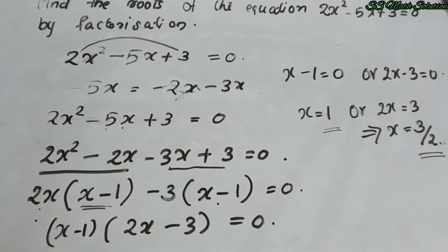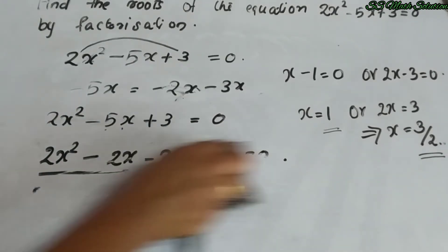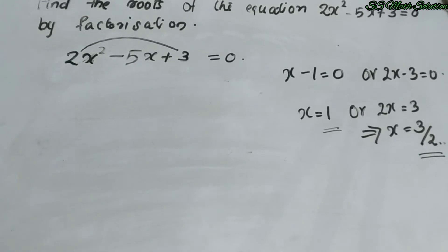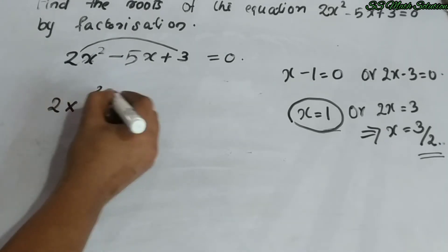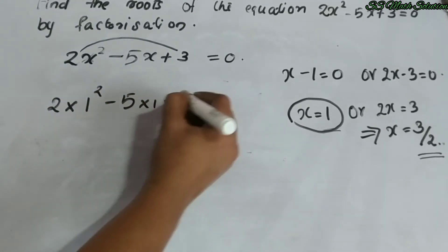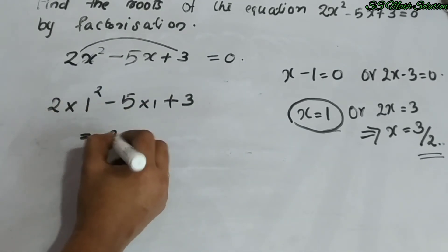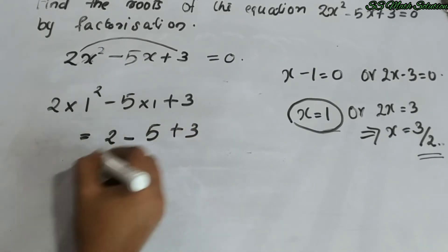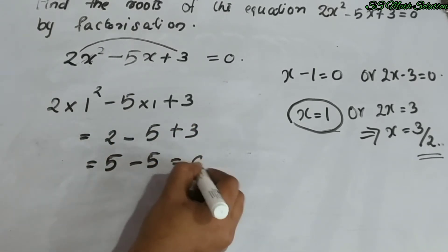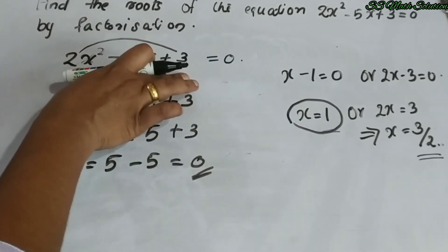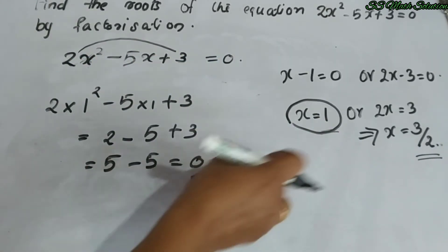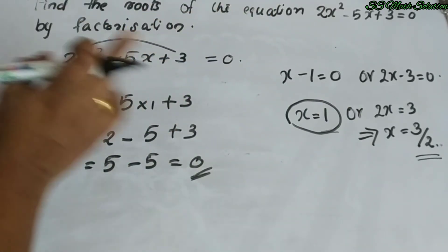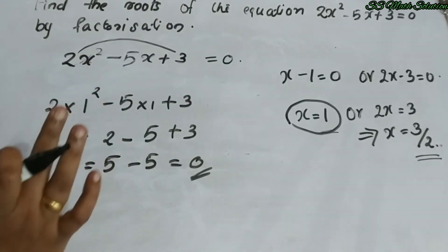How can we confirm these are the roots? We substitute x = 1 into the equation: 2(1²) − 5(1) + 3 = 2 − 5 + 3 = 0. Since the result is 0, x = 1 satisfies the equation and is a root. Similarly, we can prove x = 3/2 is also a root of this equation.